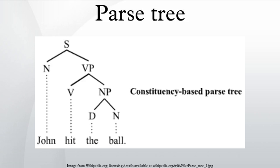Parse trees are usually constructed according to one of two competing relations: either in terms of the constituency relation of constituency grammars, or in terms of the dependency relation of dependency grammars.